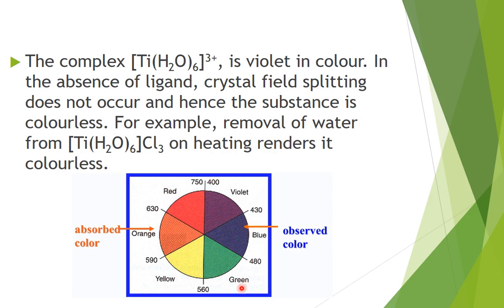Here is the color chart which shows complementary colors. If a particular wavelength is the absorbed color, its complementary is the observed color. For example, if yellow is absorbed, you will see violet color. If green is absorbed, you get red color, and vice versa.